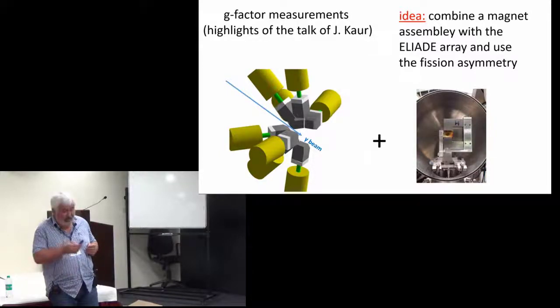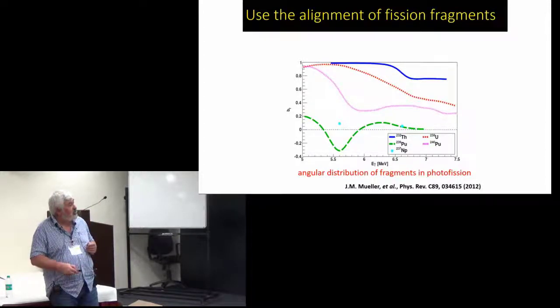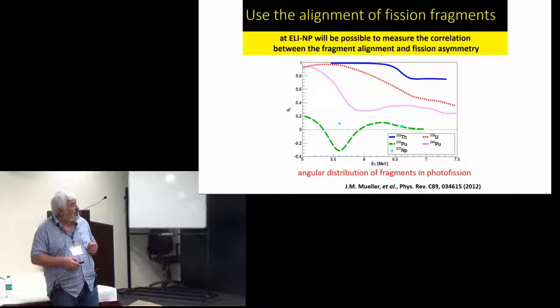There are measurements which were done at Duke which show that there is angular distribution of the fragments in photofission depending on the fission energy, and this can be used to create asymmetry in the fragment distribution.